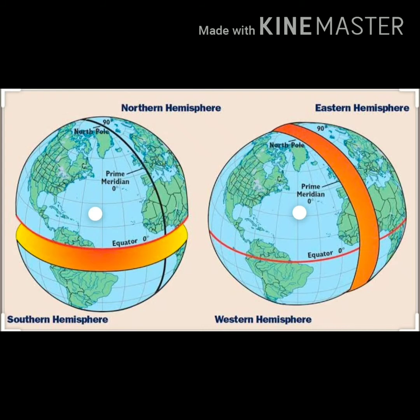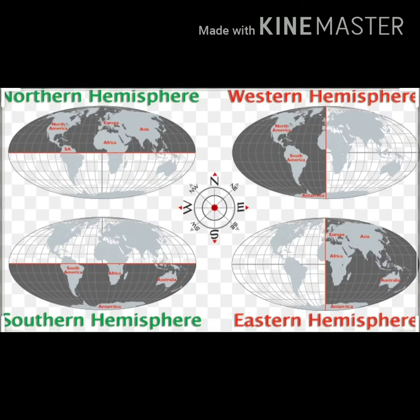In longitude, the prime meridian and the international dateline both divide the earth into two parts — the Western Hemisphere and the Eastern Hemisphere.